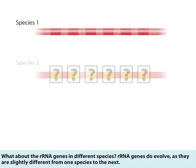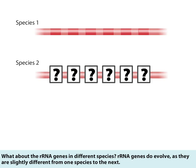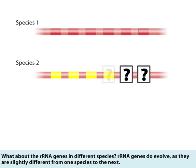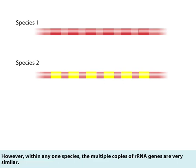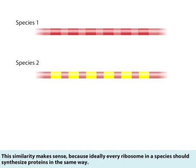What about the ribosomal RNA genes in different species? Ribosomal RNA genes do evolve, as they are slightly different from one species to the next. However, within any one species, the multiple copies of ribosomal RNA genes are very similar. This similarity makes sense, because ideally every ribosome in a species should synthesize proteins in the same way.